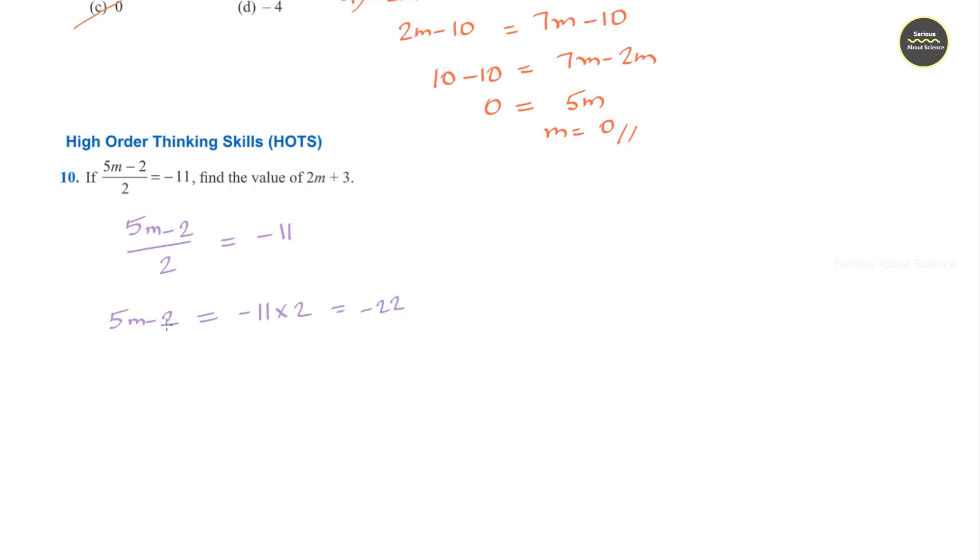Now taking this 2 to RHS, it is 5m is equal to -22 plus 2, or 5m is equal to -20, or m is equal to -20 divided by 5 which is -4.